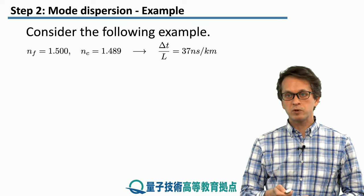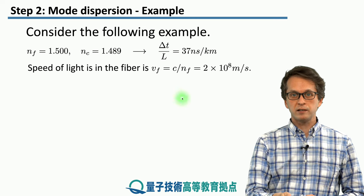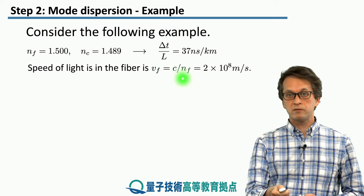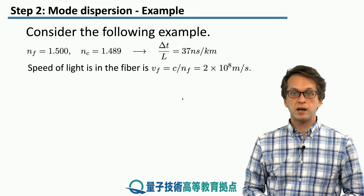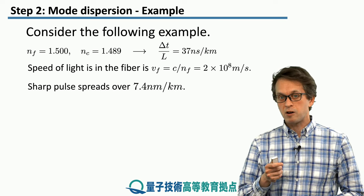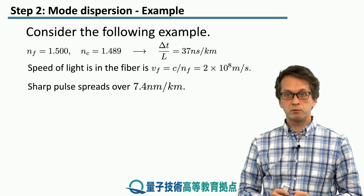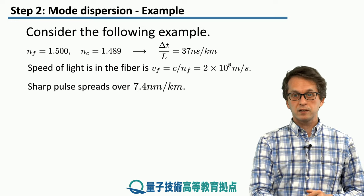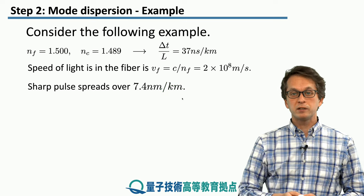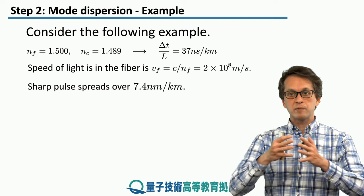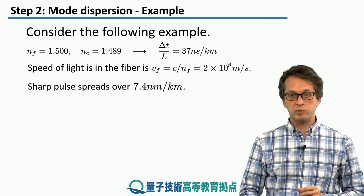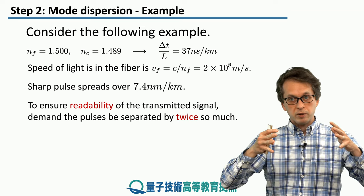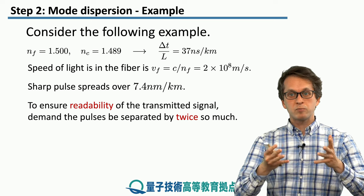This doesn't seem like a very long time delay, but we will see what effects it has. The speed of light in this fiber is Vf equals C divided by the refractive index, which is 2 times 10 to the 8 meters per second. This means our pulse spreads as it travels through the fiber, since the modes are becoming dispersed. We can quantify this spreading as 7.4 meters per kilometer — meaning every kilometer the signal travels, it becomes more spread by 7.4 meters, reducing the readability of the output signal.